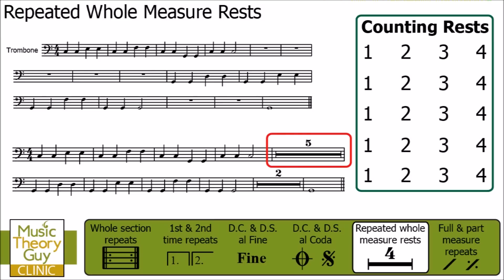The problem is, imagine you've got 32 bars or measures rest — actually counting 32 of them is quite complicated. So what musicians do, rather than going one, two, three, four repeatedly, they change the first number of that set so it increments by one every time they count a new bar.